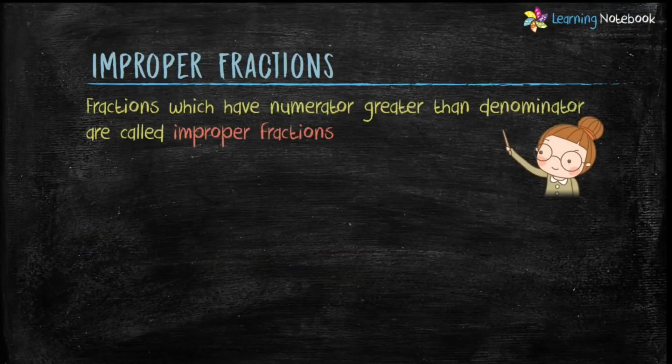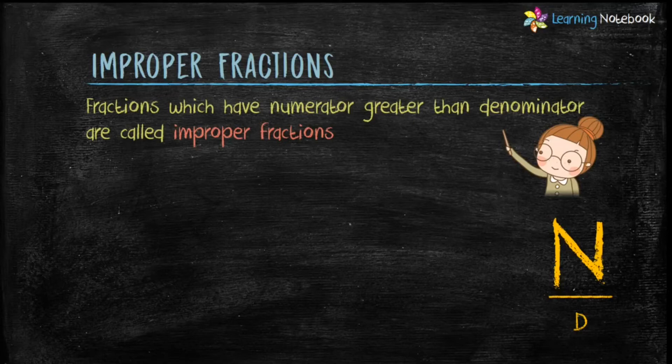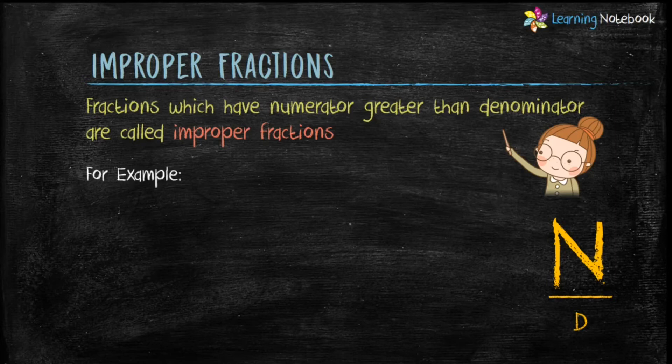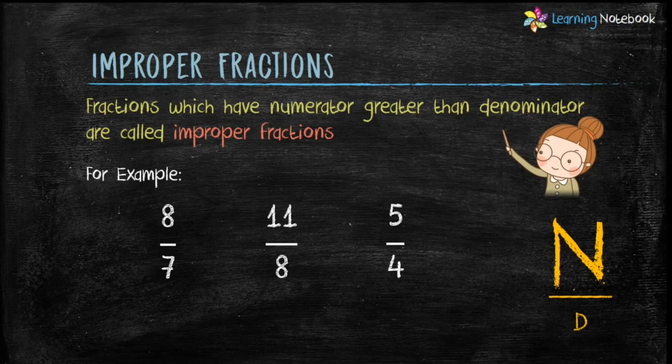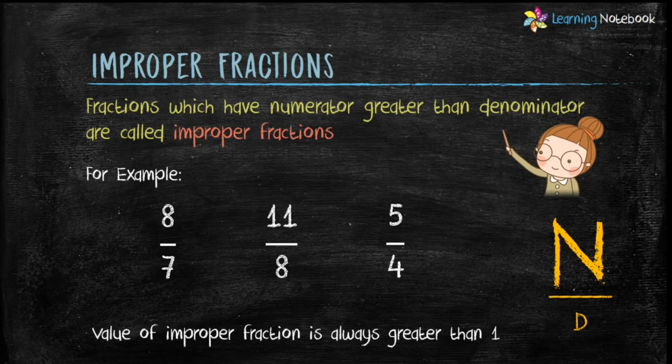Now what are improper fractions? Fractions which have numerator greater than denominator are called improper fractions. For example, 8 by 7, 11 by 8, and 5 by 4 are improper fractions because their numerators are greater than their denominators. Students, note that the value of improper fractions is always greater than 1.